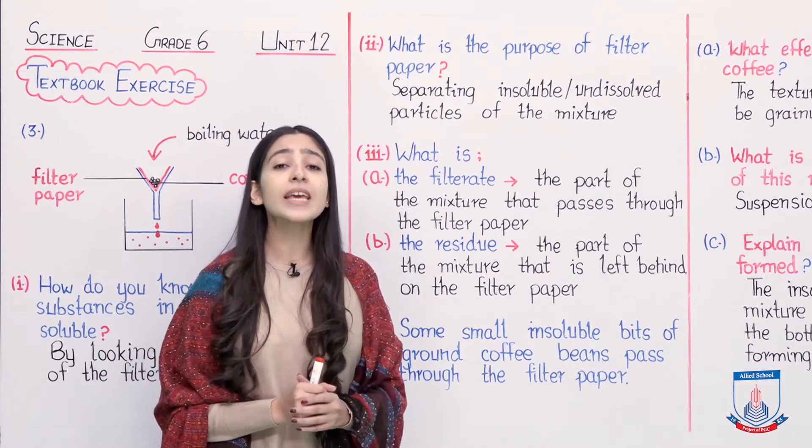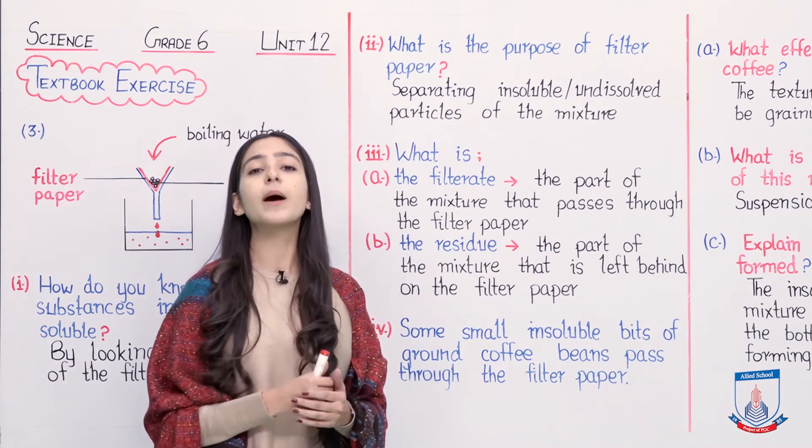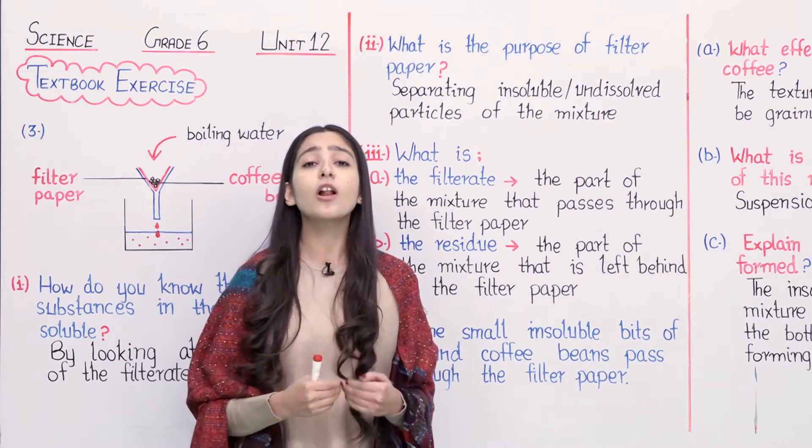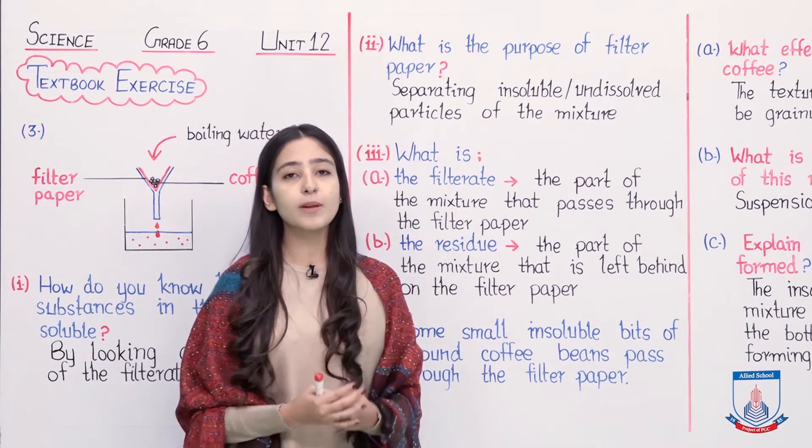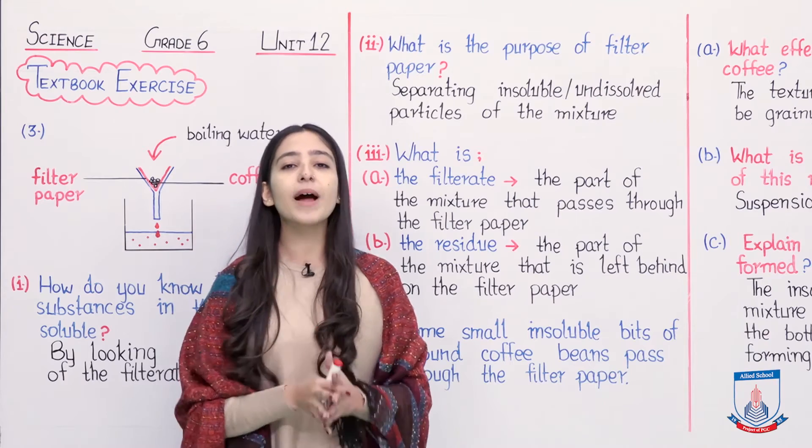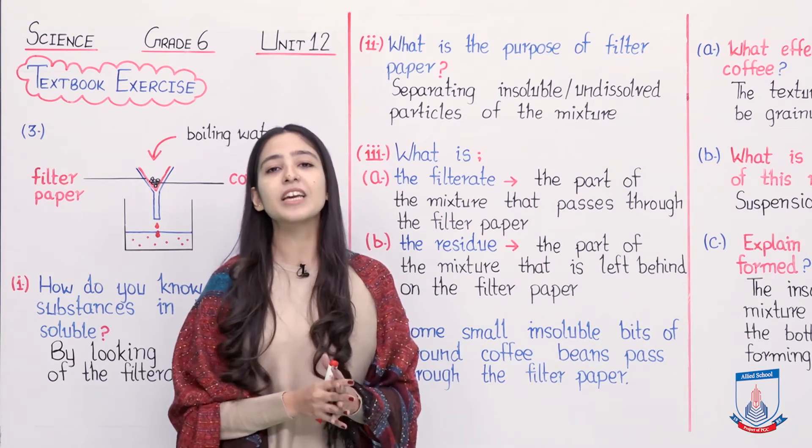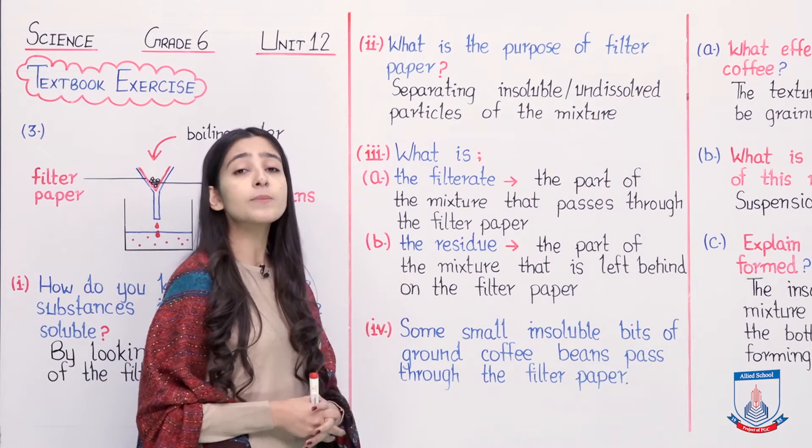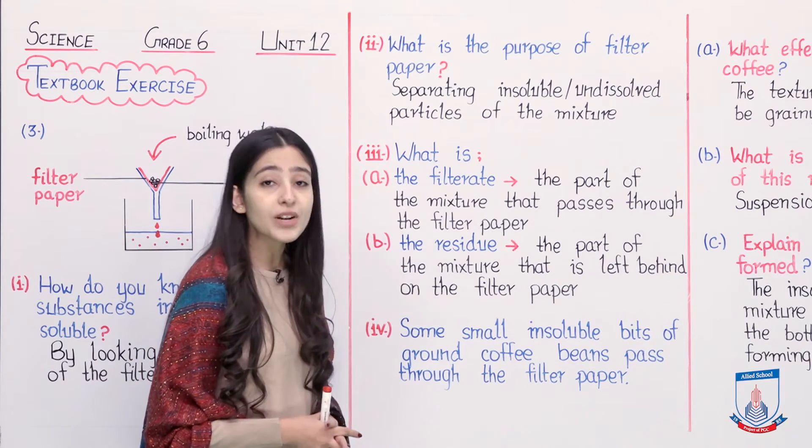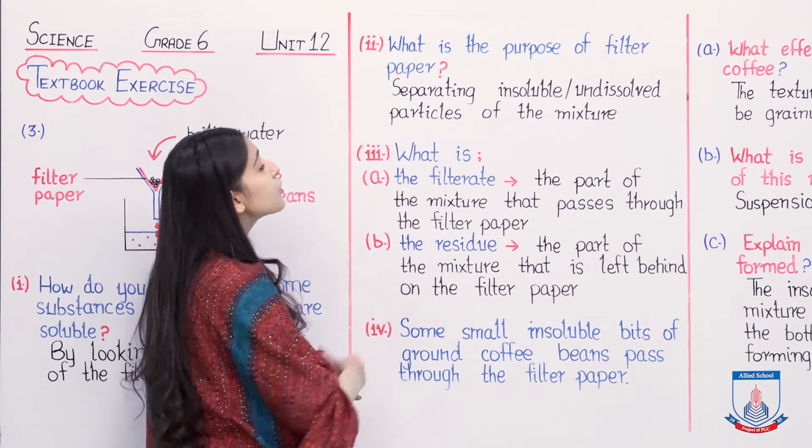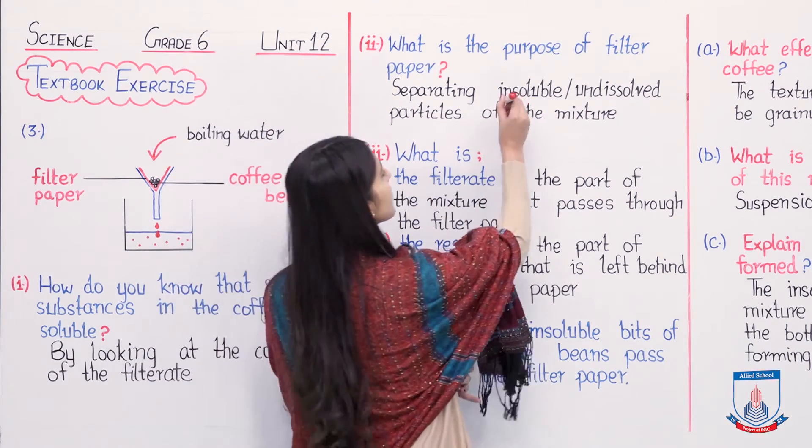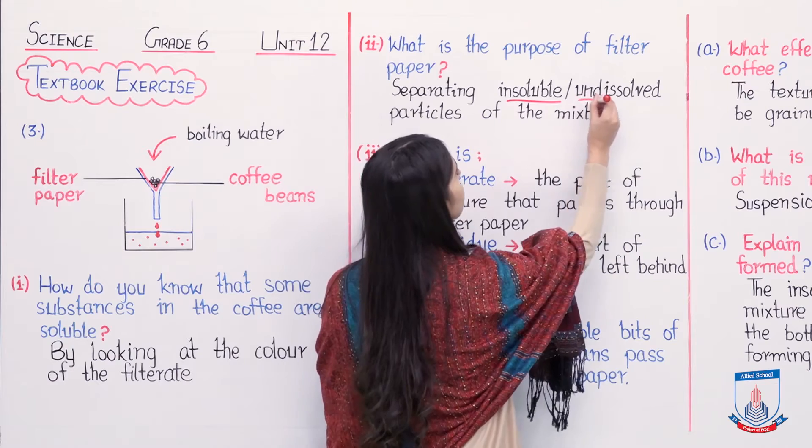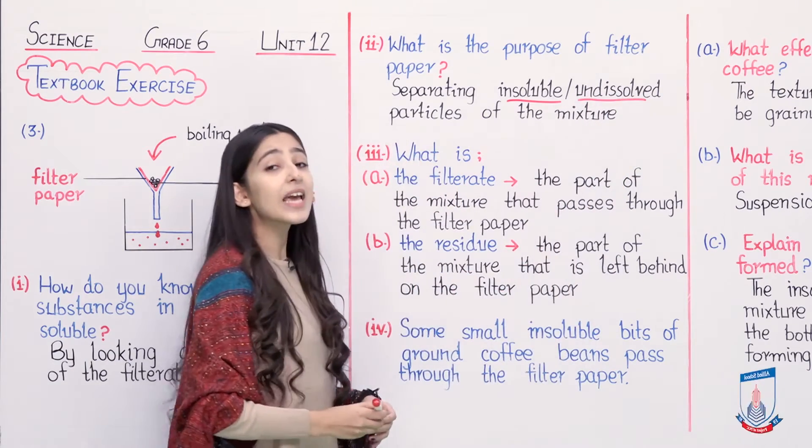So question number one was: how do you know that some substances in the coffee beans are soluble? The answer we gave is: by looking at the color of the filtrate. I hope you are understanding this well. You should note down all these answers in your notebook. Let's move to question number two.